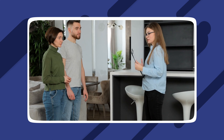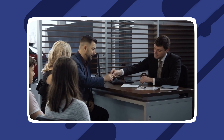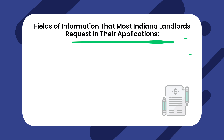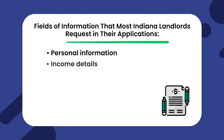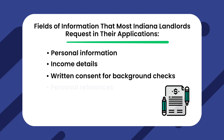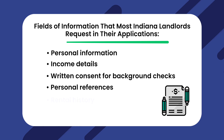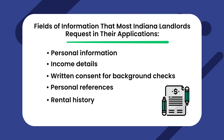Indiana allows landlords to use customized rental applications, so you can ask for most things outside of a few that can cause legal challenges, which we'll cover later in the video. As a starting point, these are a few fields of information that most Indiana landlords request: personal information, income details, written consent for background checks, personal references, and rental history.